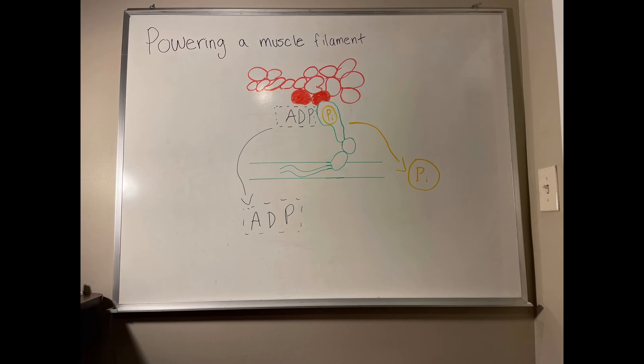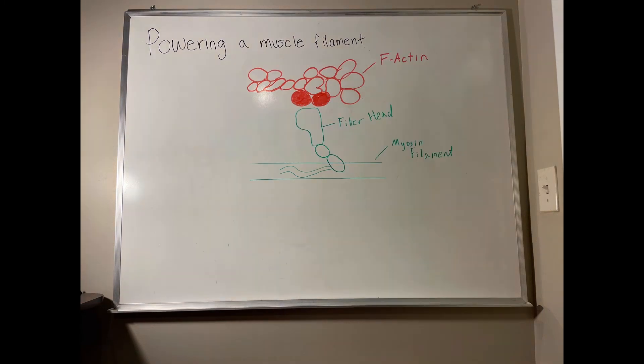The release of these two molecules is what produces the power stroke, which arranges the F-actin back into the original place ready for the ATP to come back in.